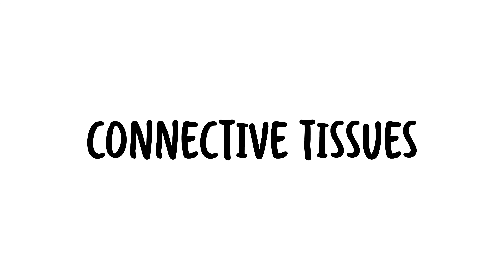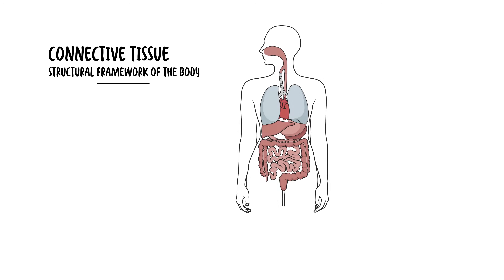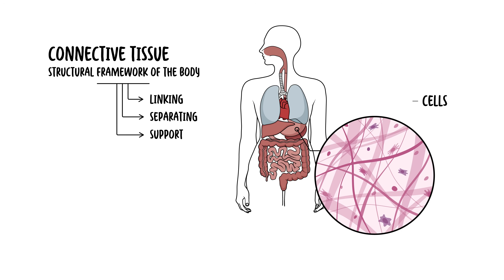Hello, in this video, we're going to talk about connective tissues. Connective tissue serves as the structural framework of the body, linking, separating, and providing support to other tissue types. It is unique among tissues because its cells are dispersed within an extracellular matrix, ECM, that is more loosely organized than in other tissues, such as the muscle or epithelial.